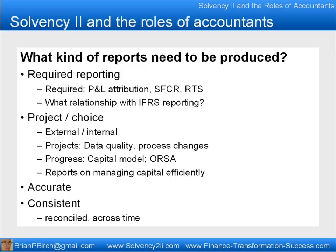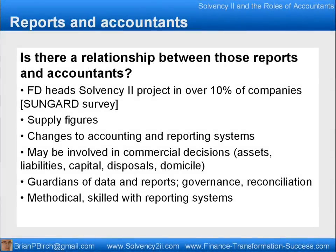The data and the reports need to be accurate, consistent over time, and reconciled to other information. Is there a relationship between those reports and accountants? Well, the finance director may be heading Solvency II in over 10% of companies, according to a SunGuard survey. Accountants may be supplying most of the quantitative figures for the Solvency II reports. The entire project may affect accounting and reporting systems. There may be many commercial decisions that accountants are involved in — understanding the capital, the assets, liabilities, disposal, and where one domiciles. Accountants may be the guardians of the data and the reports, ensuring governance and that everything reconciles. Accountants tend to be methodical and skilled with reporting systems.